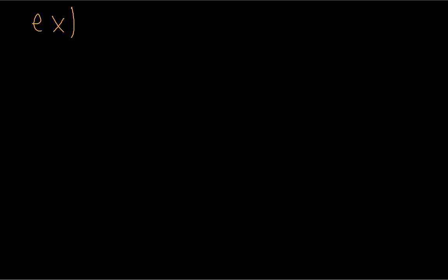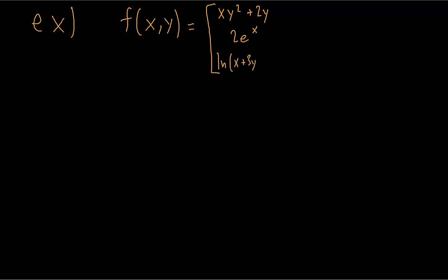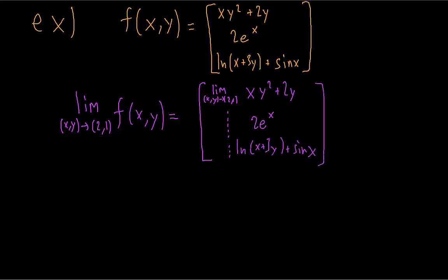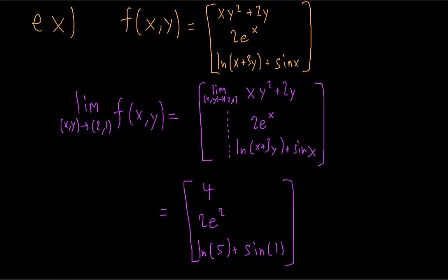If we have a vector-valued function with multiple outputs, then to find the limit of the function, we just find the limits of each output individually. Let's say we have a function where the input is x and y, and the output is three separate functions. If we want to find the limit as x, y approaches (2, 1), we find the limit of each individual output function — these are called the component functions of the vector-valued function. You just evaluate all the limits individually. If one of the component functions does not approach a limit, then the limit of the function as a whole does not exist. The limit is just the vector containing the limits of each of the component functions.